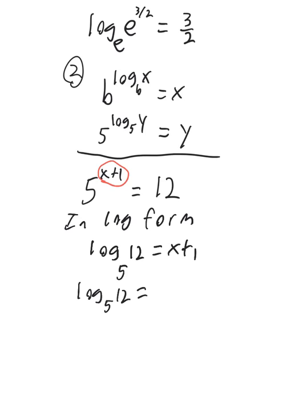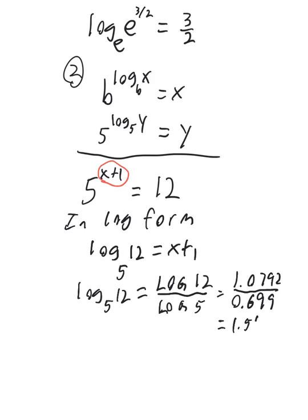Now, we can figure out what the log is using our change of base formula. Log base 5 of 12 is just log of 12 divided by log of 5. And notice I'm using, I'm not writing in the base, but that's a common logarithm. So that means base 10. So log of 12 is 1.0792 from your calculator. And log of 5 is 0.699. And then if I do the division, 1.0792 divided by 0.699, just do that on a calculator, I'm going to get that's about 1.544.